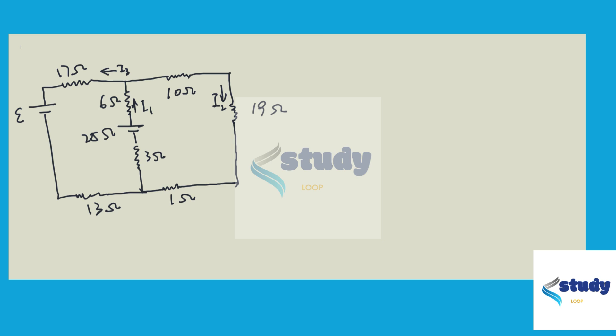So we define I1 is the current going through this 6-ohm resistor which is going up with the value of I1.